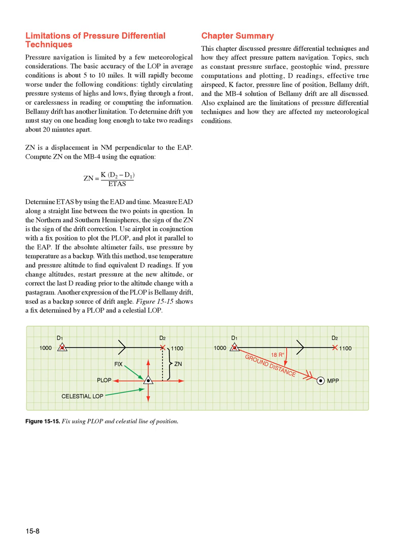Zn is a displacement in nautical miles perpendicular to the EAP. Compute Zn on the MB4 using the equation. Determine ETAS by using the EAD and time. Measure EAD along a straight line between the two points in question. In the northern and southern hemispheres, the sign of the Zn is the sign of the drift correction. Use airplot in conjunction with a fixed position to plot the PLOP and plot it parallel to the EAP. If the absolute altimeter fails, use pressure by temperature as a backup. With this method, use temperature and pressure altitude to find equivalent D readings. If you change altitudes, restart pressure at the new altitude or correct the last D reading prior to the altitude change with a postagram. Another expression of the PLOP is Bellamy drift, used as a backup source of drift angle. Figure 15-15 shows a fix determined by a PLOP in a celestial LOP.